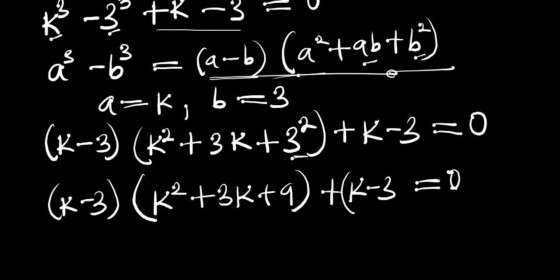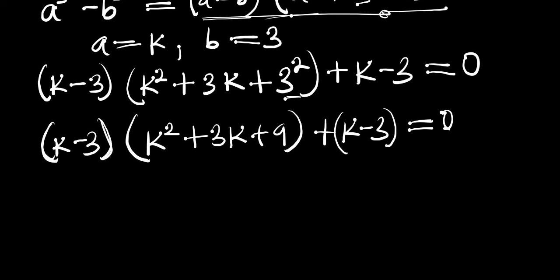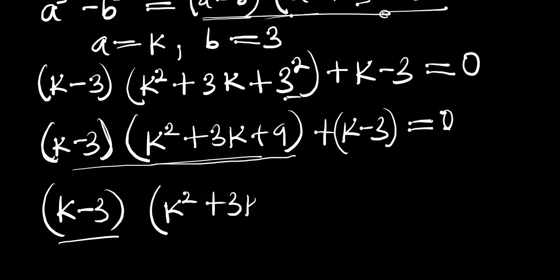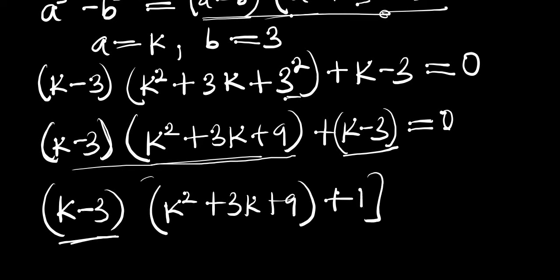We have (k minus 3) here and (k minus 3) here, so we can factor that out. Writing it out: (k minus 3), then dividing the remaining terms by (k minus 3) gives k squared plus 3k plus 9, and dividing the last part by (k minus 3) gives plus 1. This equals zero.